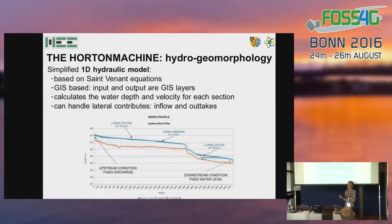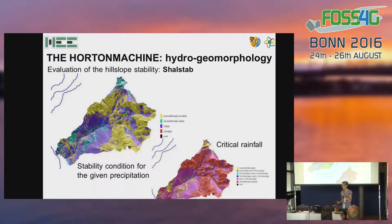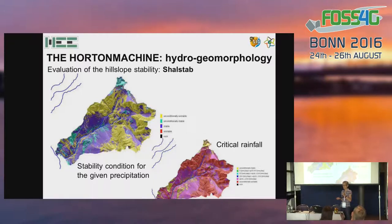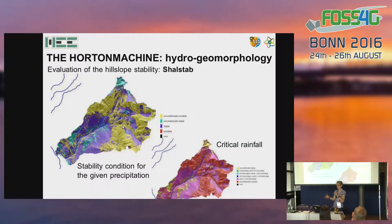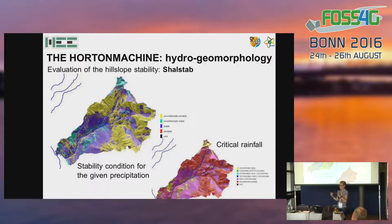In the hydraulics section, we also have modules to prepare data for the HECRAS 1D model. In the field of natural hazards, we also have a module to evaluate hillslope stability. With this module, it is possible to obtain a map with the stability condition for a given precipitation, but also a map with the critical precipitation in each pixel. So you can know which pixels are always stable, unconditionally stable, or unconditionally unstable.